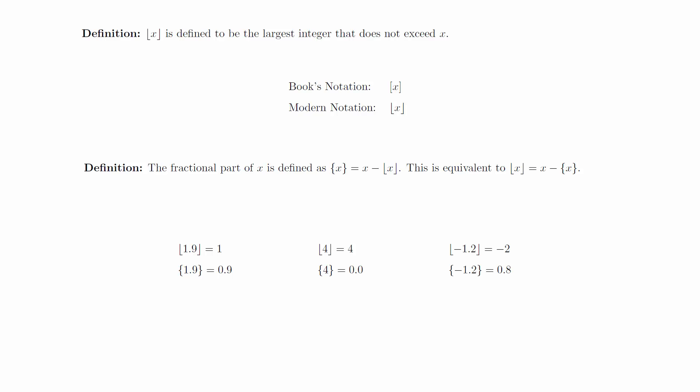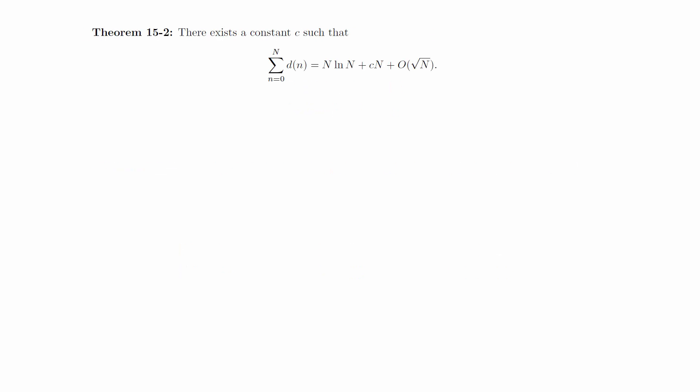We will now look into the divisor problem. There exists a constant c such that the sum of d of n is equal to n times ln of n, plus c times n, plus o of the square root of n.